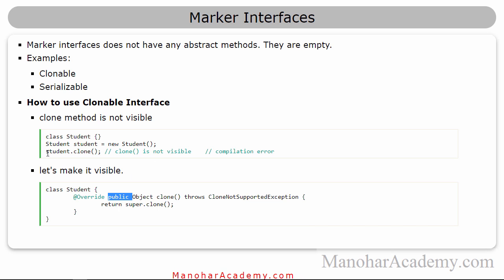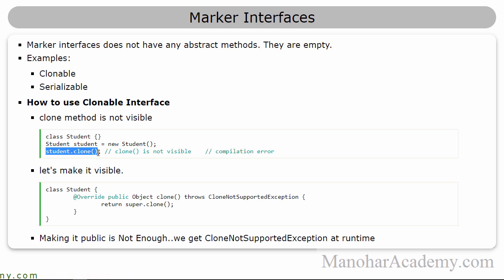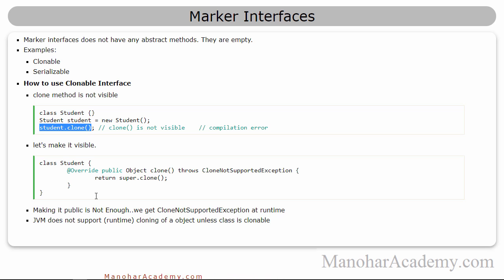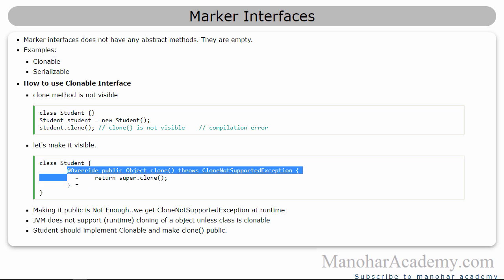But when you run it, it is not going to create a clone. At runtime, we are going to get a CloneNotSupportedException. So making the clone method public is not enough. We are getting that exception because the JVM does not support cloning of objects that are not Cloneable. So we have to explicitly make the student class Cloneable.